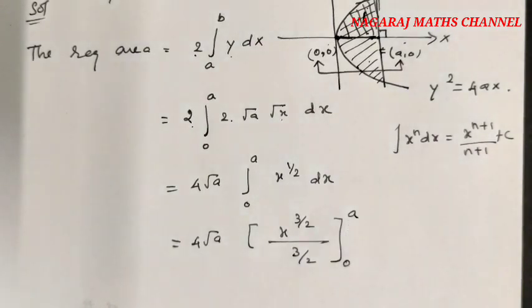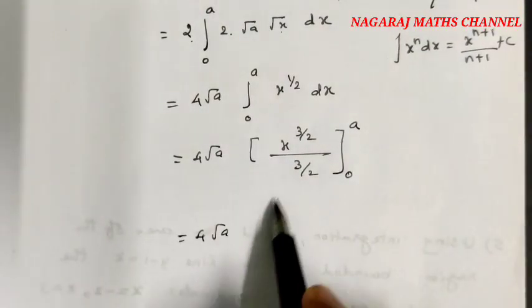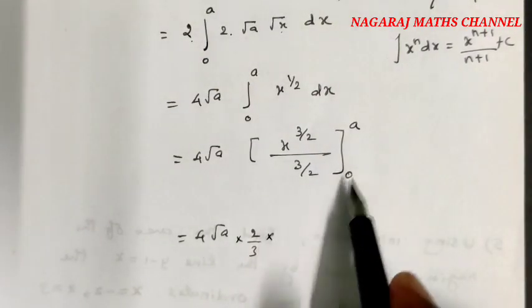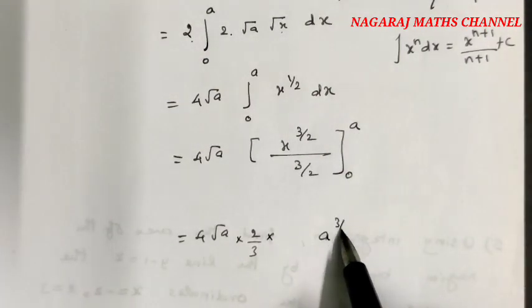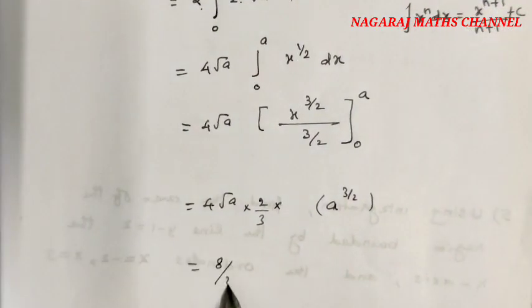The integral of x^n dx is x^(n+1)/(n+1) + c. So we have 4√a times [x^(3/2)/(3/2)] evaluated from 0 to a. This equals 4√a times (2/3) times x^(3/2) from 0 to a.